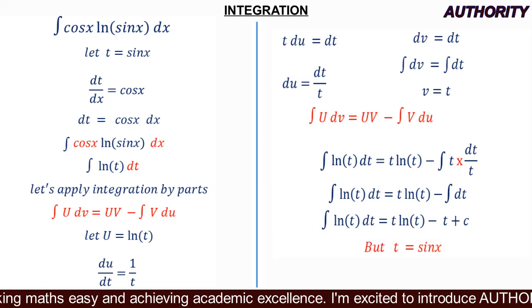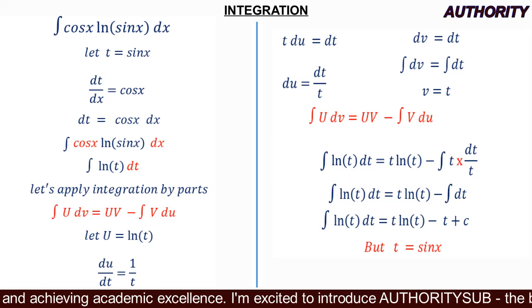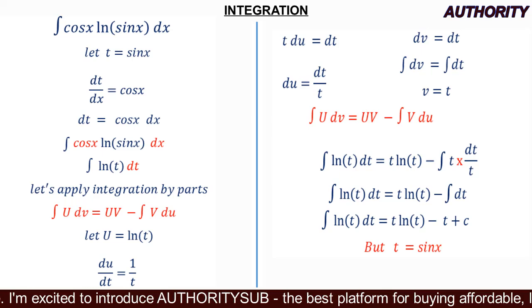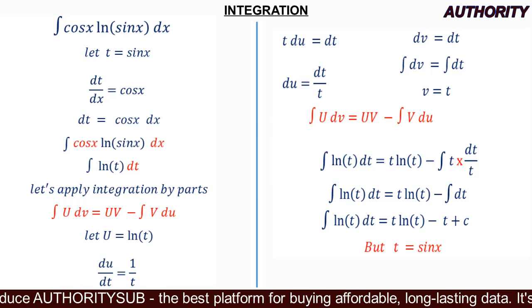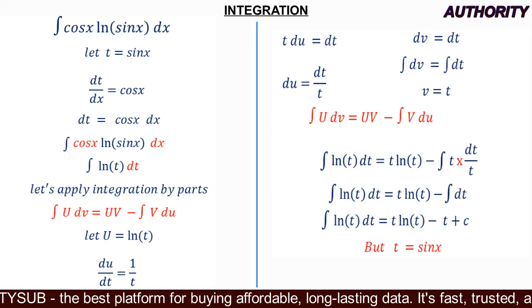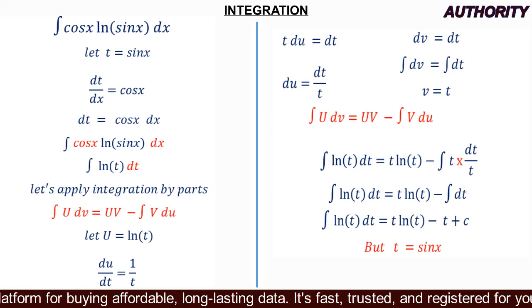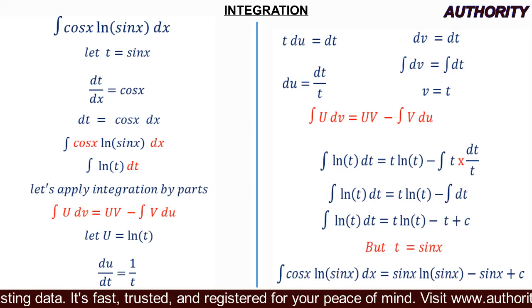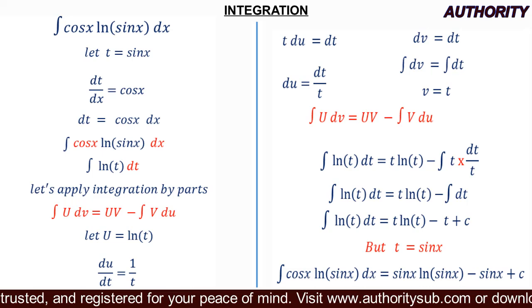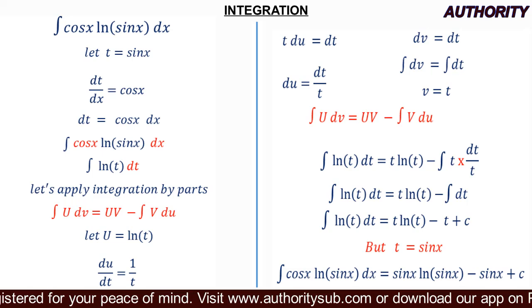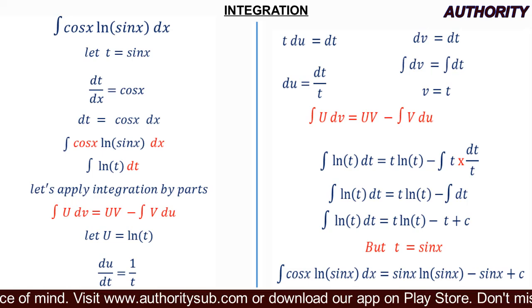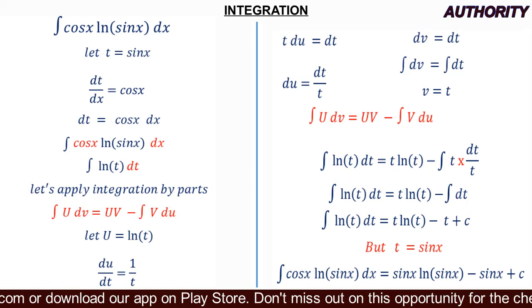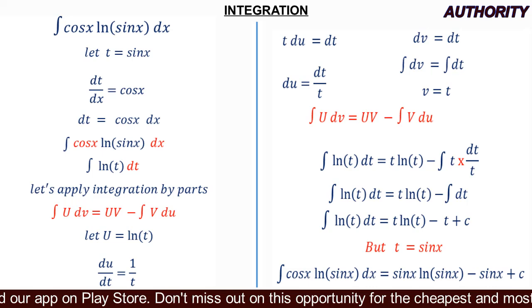Recall that we let t = sin(x), so we substitute back. The integral of cos(x)·ln(sin(x))dx = sin(x)·ln(sin(x)) − sin(x) + C.